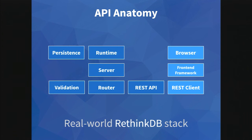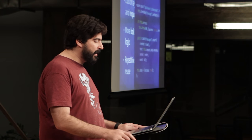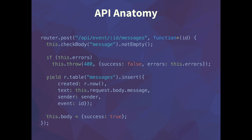Here's a more generalized version of that: your runtime, your server, your router — the categories I described before. So what's the problem? You end up with a lot of layers between incoming requests and your persistence layer where you're manipulating the data. You end up with a lot more boilerplate than business logic, especially in a simple app when you're prototyping. And you get a lot of repetitive code that's difficult to reuse and difficult to abstract into a reusable pattern. Here's a sample endpoint from one of my applications — you end up writing dozens of these where it's just: here's the path, here's your validation, here's throwing an error if it doesn't validate, and then we talk to the database and return a response. There's a lot of plumbing and boilerplate involved. This is done with Koa; there's actually not as much boilerplate as there would be with Express, but it's still pretty painful and repetitive.